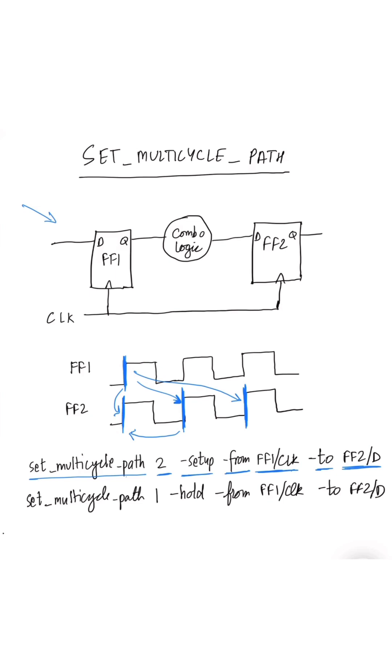We would need to write a set multi-cycle path 1 to move back hold timing check by one cycle, minus hold because it's for hold timing analysis. So always remember that we have to write these two constraints in a pair, because whenever we write a set multi-cycle path constraint for setup timing analysis, we have to write a hold multi-cycle path constraint to move back the hold check to where it originally was.